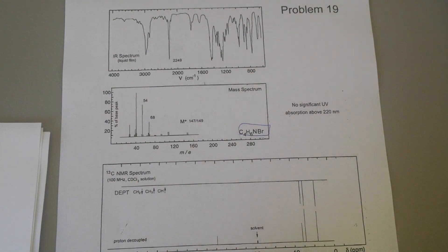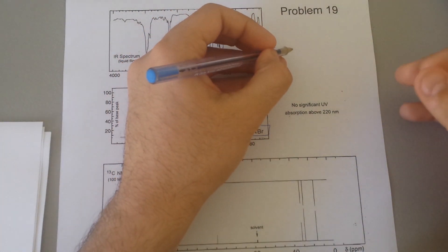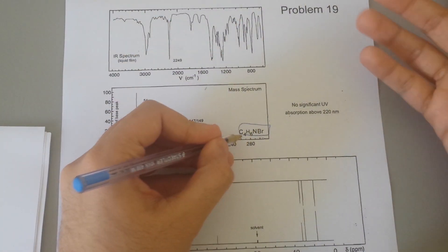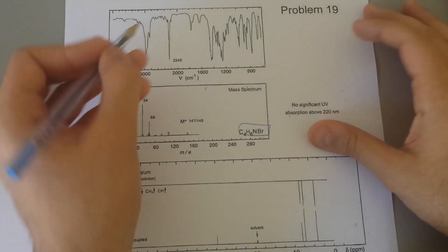So first of all, if you have watched my previous videos, if you want to do this type of question, you have to first find the degrees of unsaturation. Are we dealing with an aromatic group or not? In this case you can already tell it is not an aromatic group because it's only four carbons.